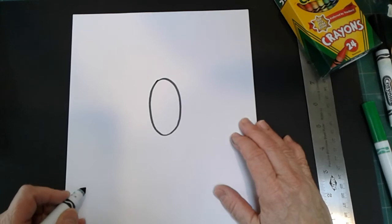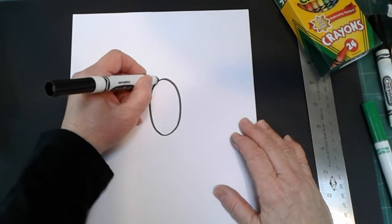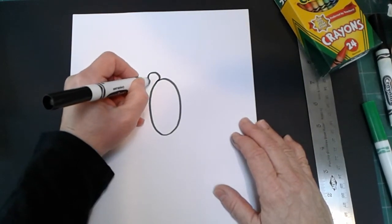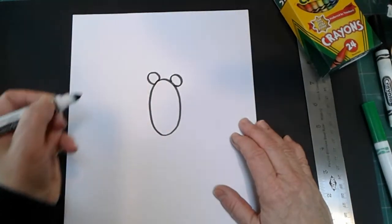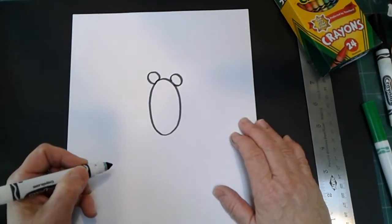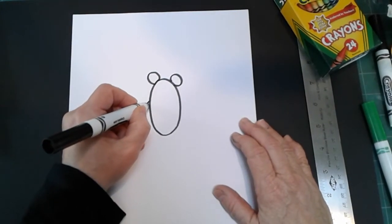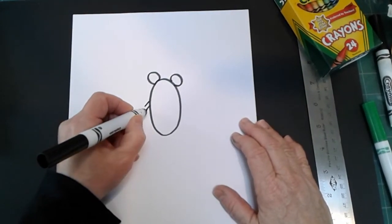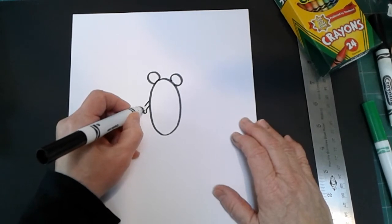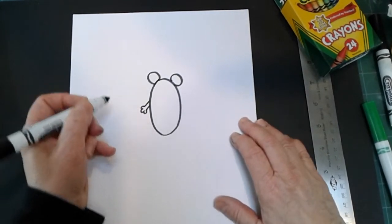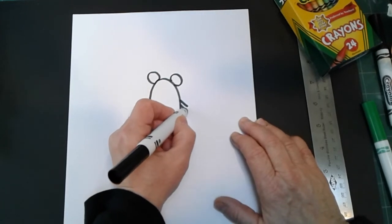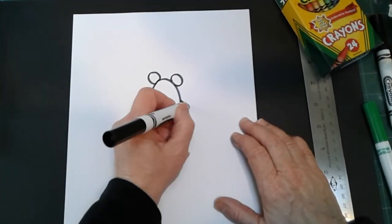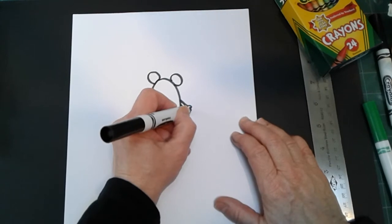I am going to give this mouse two ears, two little circle ears, and I'm going to give him two arms. I'm going to give him three fingers on each hand. So as you can see, I'm making two straight lines, diagonal straight lines, and then three little loops.